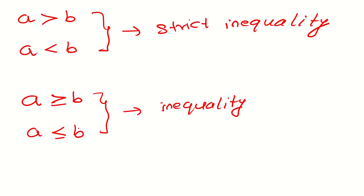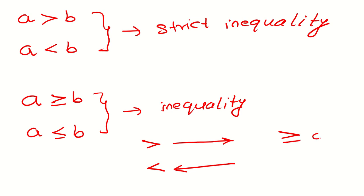If you want to draw the graph of these inequalities, if it is greater than, then the line will go to the right. If it is less than, then the line will go to the left. If there is an equal to sign also, then you will make a filled circle. If there is no equal to sign, like a strict inequality, then you will make a blank circle on that particular number.